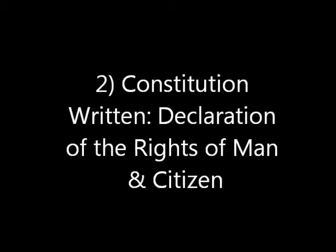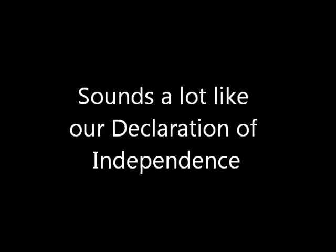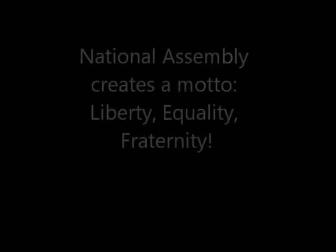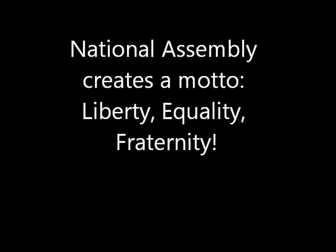Second, they wrote a constitution called the Declaration of the Rights of Man and of Citizen, a document very similar to the American Declaration of Independence. The Declaration of the Rights of Man guaranteed people rights they had not previously enjoyed under the Ancien Régime, or Old Régime — in other words, the absolute monarchy. The National Assembly also adopted the motto Liberty, Equality, Fraternity, which is the French national motto even today.